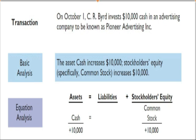Moving on to this example of transaction analysis. On October 1st, C.R. Byrd invests $10,000 cash in an advertising company to be known as Pioneer Advertising, Inc. C.R. Byrd is an individual, and the personal transactions of the individual have to be separate from the transactions of the entity. So even though this individual is investing $10,000 of his own money into this new company, Pioneer Advertising, Inc., we are now putting on the hat of Pioneer Advertising, Inc. Pioneer Advertising, Inc. received $10,000 in cash and issued common stock to C.R. Byrd.